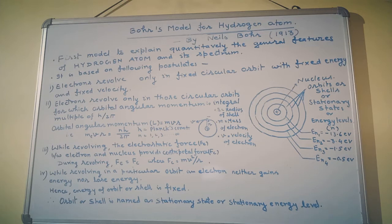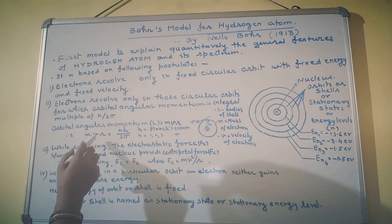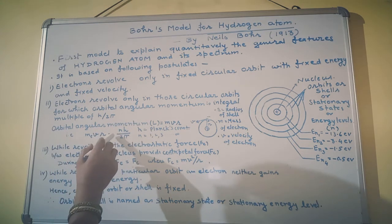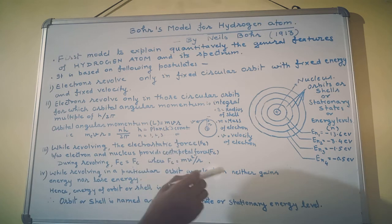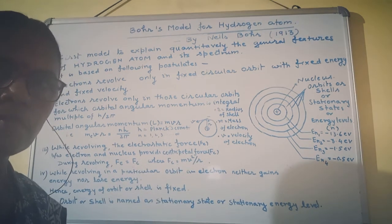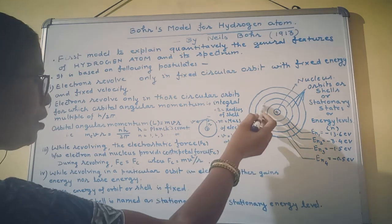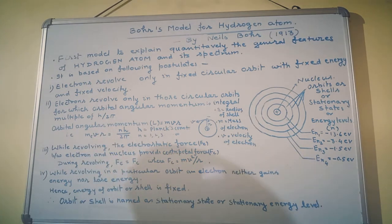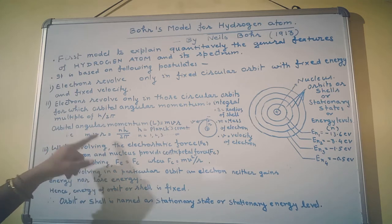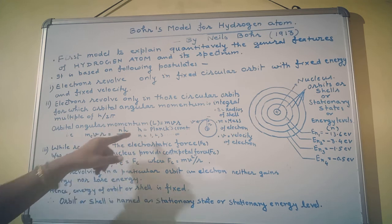The electron revolves in a circular orbit. In this circular orbit, the electron's orbital angular momentum will be equal to nh by 2π, where n is the number of the shell. If it revolves in the first shell, n value will be 1. In the second shell, n value will be 2. In whichever shell the electron revolves, its orbital angular momentum will be equal to nh by 2π.